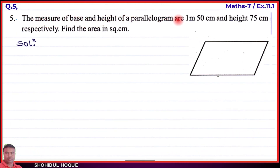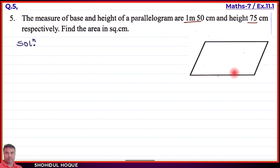Question number 5: The measure of base and height of a parallelogram are 1 meter 50 centimeter and 75 centimeter respectively. Find the area in square centimeter. So we are given the base and height of a parallelogram, and we need to find the area.